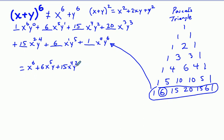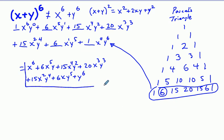I'm going to continue writing here to the right. Plus 20 x cubed, y cubed. And I'm going to write below here, plus 15 x squared, y to the fourth power, plus 6 x, y to the fifth power, plus y to the sixth power. And this is our complete binomial expansion.